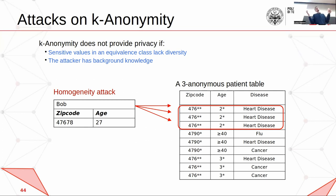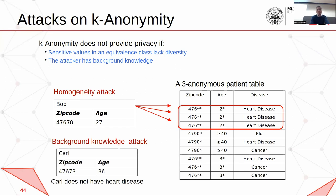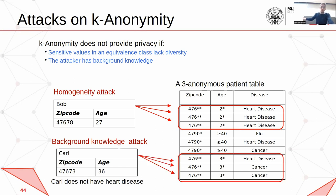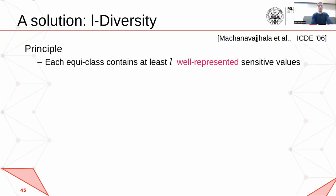Another issue is background knowledge attack. You don't know what the attacker knows. The attacker might know that a person named Carl does not have heart disease. So given this zip code and age, we have two different sensitive attribute values. But since the attacker knows Carl doesn't have any heart disease, the attacker can infer that Carl has cancer. For this problem, one solution can be L-diversity. L-diversity means we don't just have to guarantee the dataset is k-anonymous, but also that the sensitive attributes are diverse, because k-anonymity works on quasi-identifiers, not on the sensitive attributes.